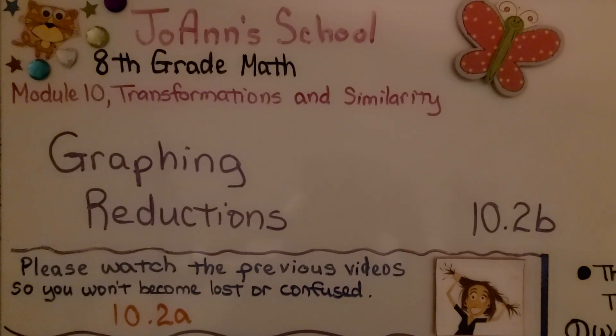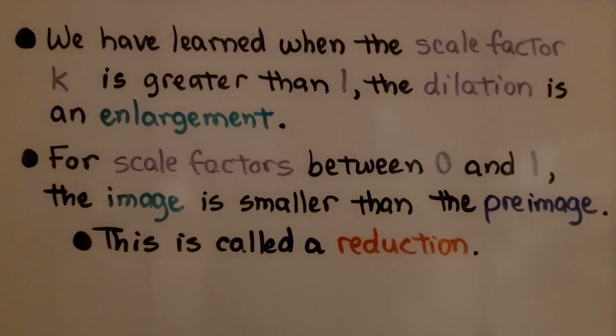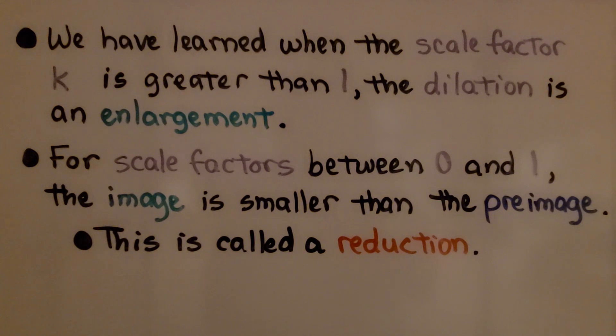Graphing Reductions, Lesson 10.2b. We have learned when the scale factor k is greater than 1, the dilation is an enlargement. For scale factors between 0 and 1, the image is smaller than the preimage. This is called a reduction.